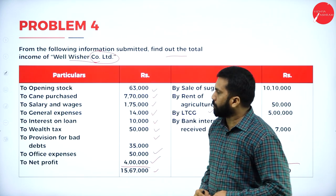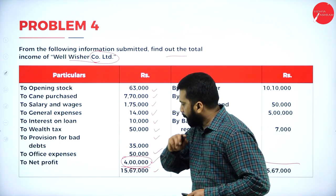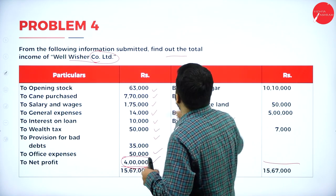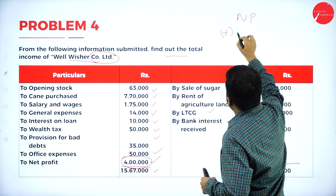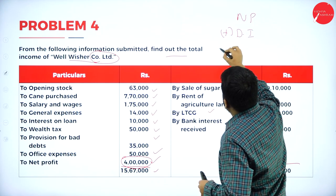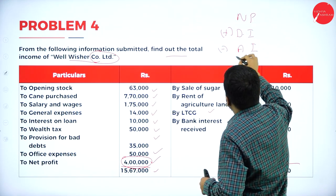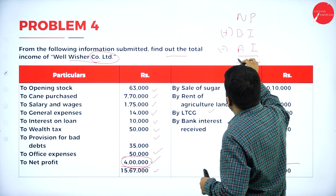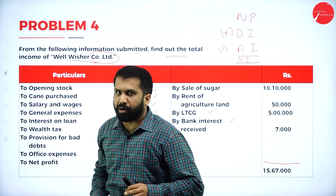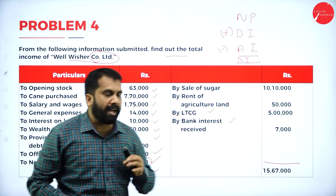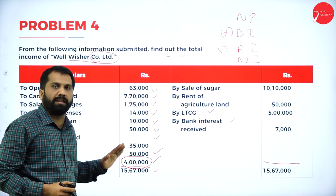What we are supposed to do: we have to take net profit, add disallowed items, and minus allowed items — you will get your business income or income from your company. Net profit is already given in the question paper — it is 4 lakh.